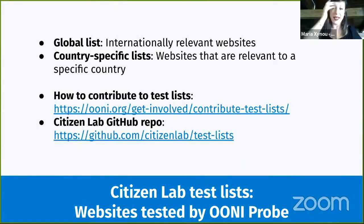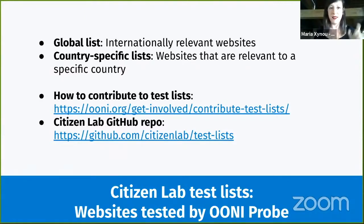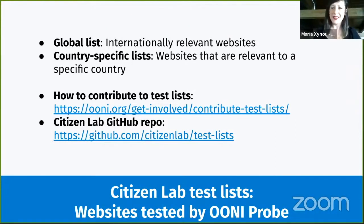The websites you test with OONI Probe are hosted on GitHub by the Citizen Lab, and there are essentially two types of lists. On the one hand, you test websites in the global list, which includes internationally relevant websites such as Facebook.com, BBC, and others — tested by all OONI Probe users worldwide regardless of country. Then, depending on the country you're running OONI Probe from, you'll also test the country-specific list. For example, running OONI Probe in Italy means testing the global list and the Italian list, which includes Italian news media, Italian human rights websites, and so on.